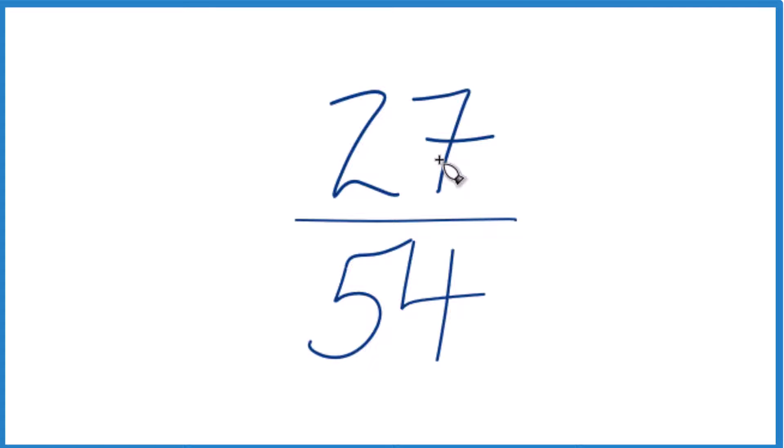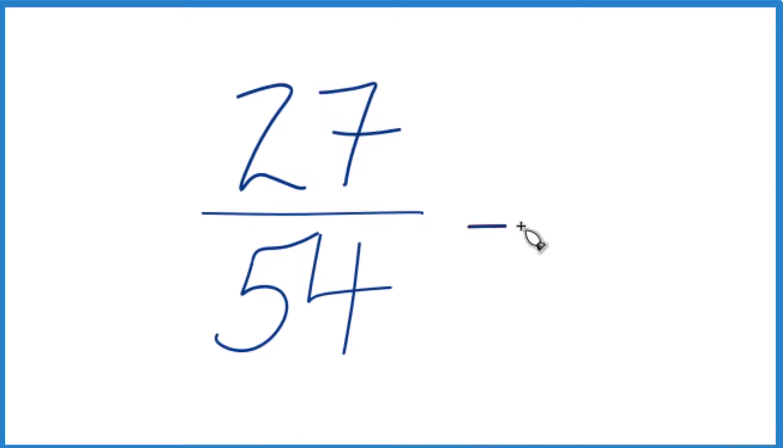I know that 9 goes into 27 and 54. If you know your multiplication tables, you can remember that pretty easily. So, if we divide 27 by 9, that's 3.